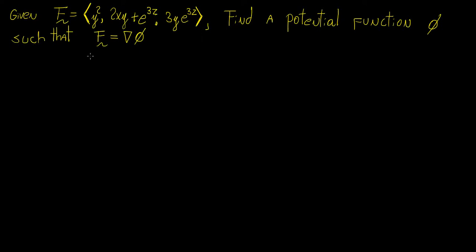In this particular video, we're going to be looking at this question here. We're given a vector field of three variables, and we're told to find a potential function phi that satisfies the following relation: the vector field is going to be equal to the gradient of that scalar function, which is called a potential function.